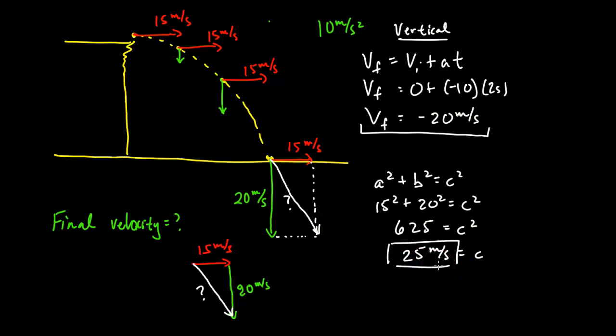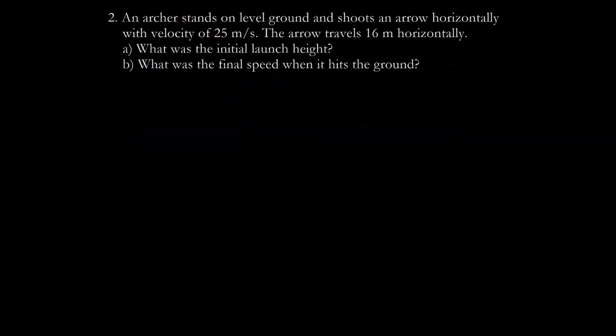The final speed of the baseball right before it hits the ground is 25 meters per second. Now here's another problem — you may want to pause and try it yourself, then check your answers afterwards.